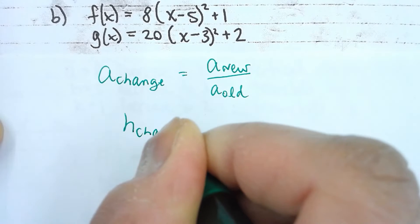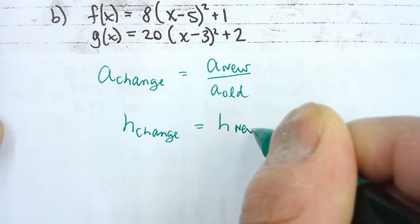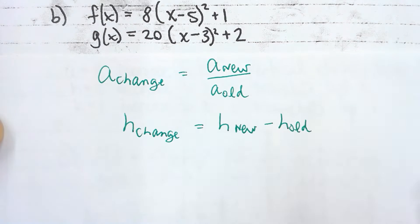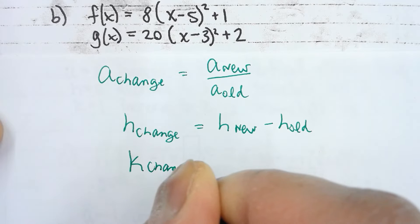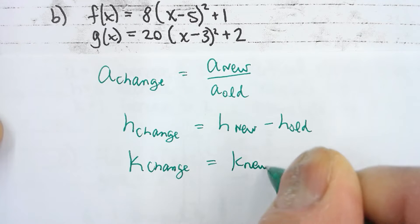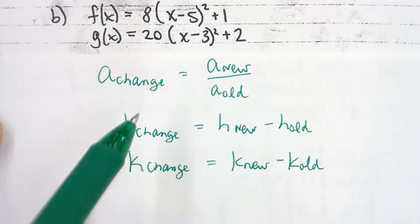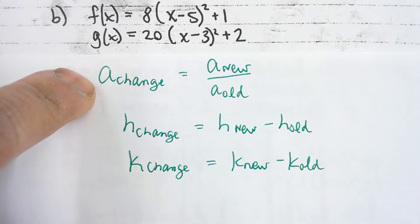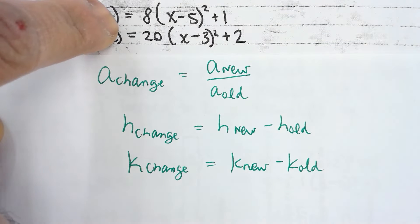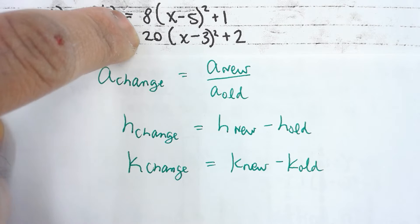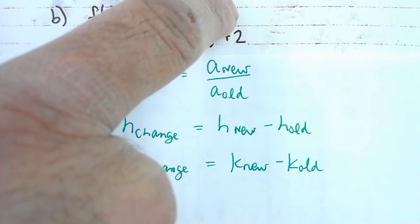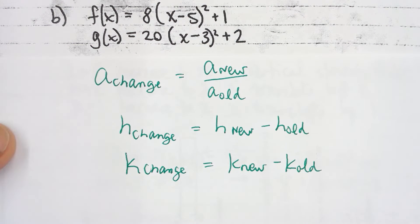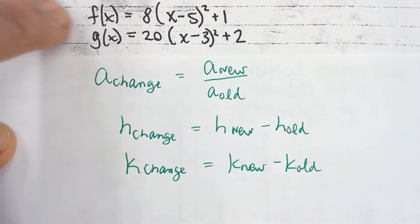For h and k, to find the change in h, take the new h and subtract the old h. To find the change in k, take the new k and subtract the old k. The reason you divide for a is that a is a multiplicative factor — the opposite operation is division. Whereas h and k are additive changes, so to find the difference you subtract. You're always doing the inverse operation.